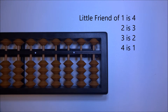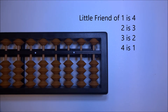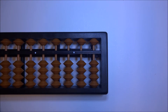Little friend of 3 is 2, and little friend of 4 is 1. So why are we talking about little friends again? Continuing with our subtractions, let's try this.